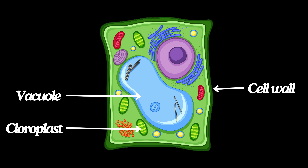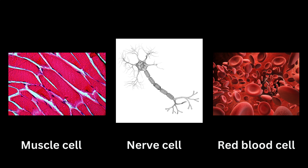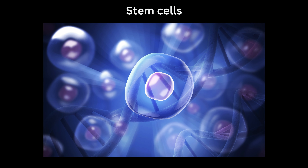Both plant and animal cells have many similarities. Specialized cells include muscle, nerve, and blood cells. Stem cells can develop into specialized cells and help repair damaged tissues. Types of stem cells include embryonic stem cells, which come from embryos, and adult stem cells, which are found in various tissues.